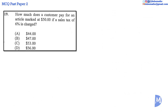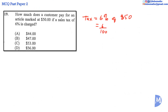Question 19. A sales tax is paid in addition to the price marked. The tax is equal to 6% of $50, which is equal to 6 over 100 multiplied by 50.